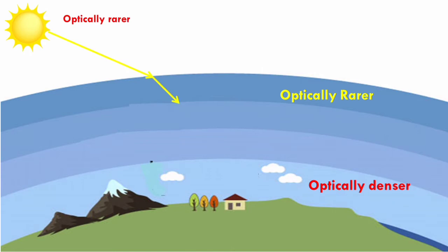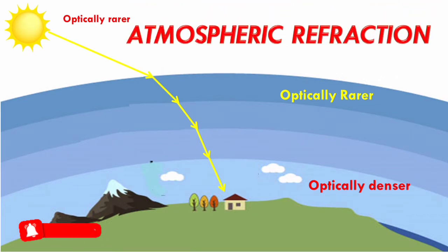So, when light rays pass through the atmosphere, they undergo refraction while entering from one layer to another air layer of different optical densities and this type of refraction is known as atmospheric refraction.